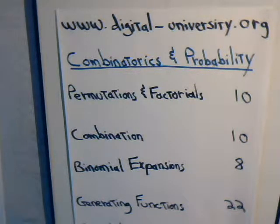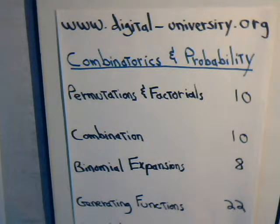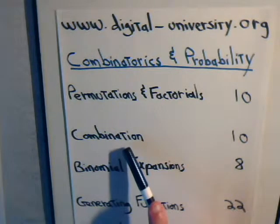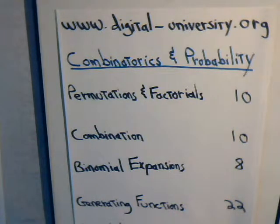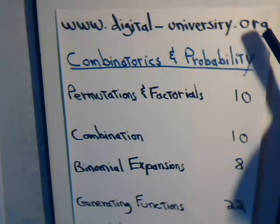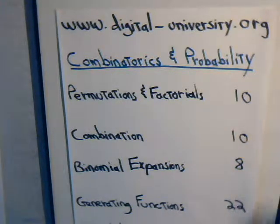This is video number 12 for solving different types of probability problems posted from digital-university.org. It's another type of Bernoulli probability problem. To solve these, we draw heavily upon earlier videos concerning combination problems and permutation problems — particularly permutations that involve repeats and how they can be recast as combination problems. If you're not familiar with that, go to digital-university.org and click on the Combinatorics and Probability section to access those earlier videos.